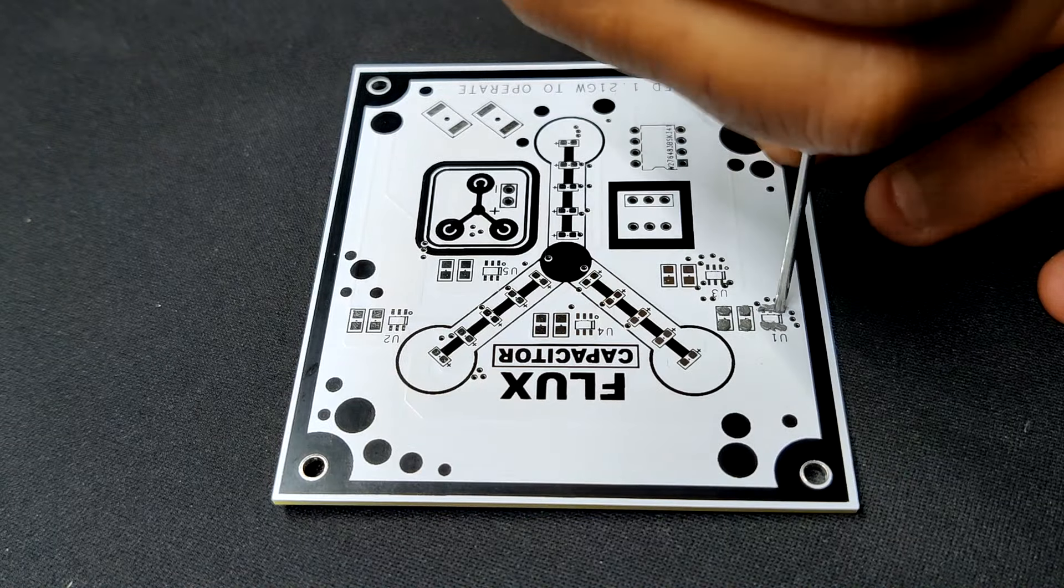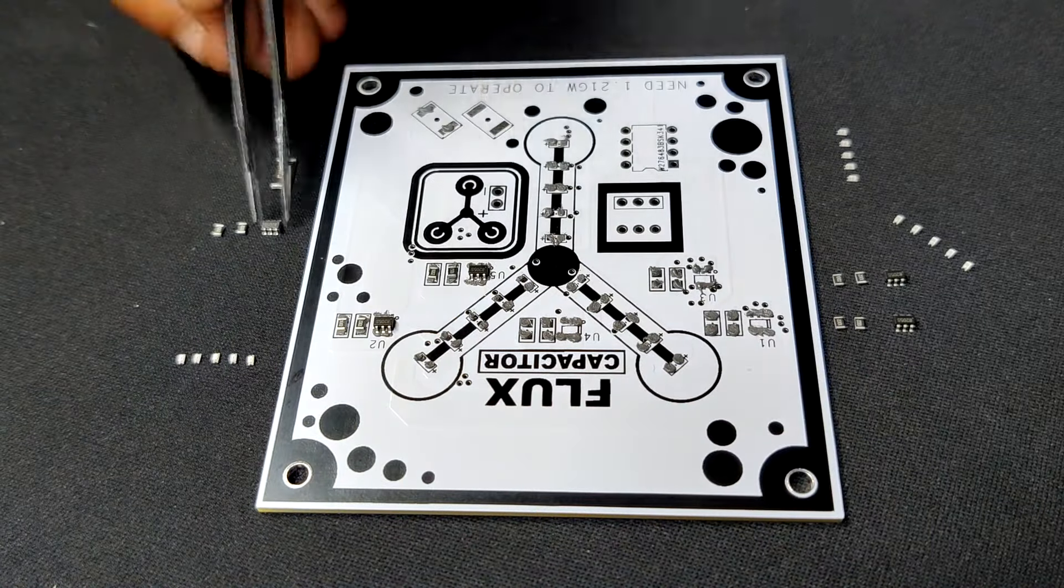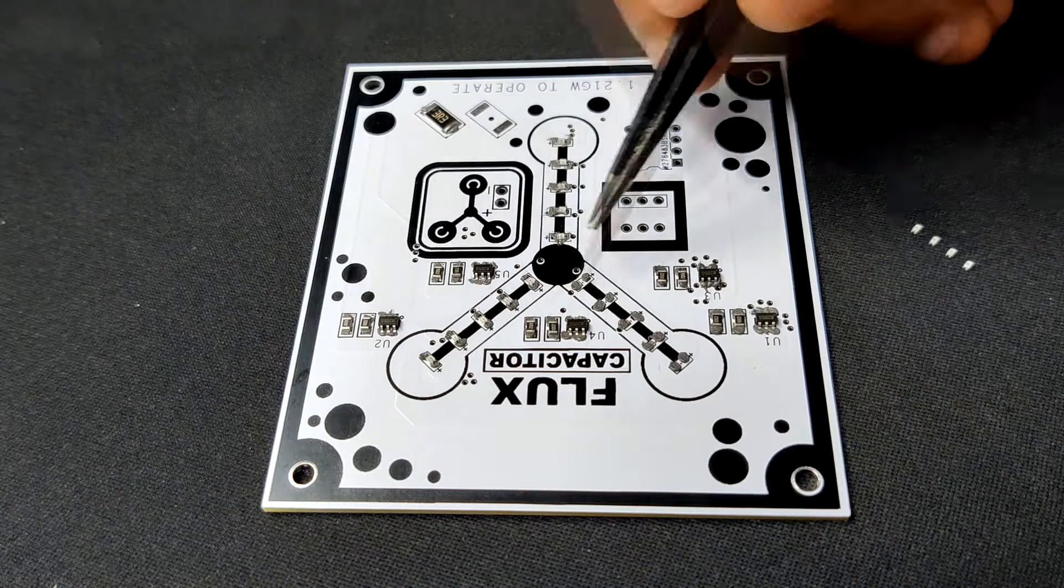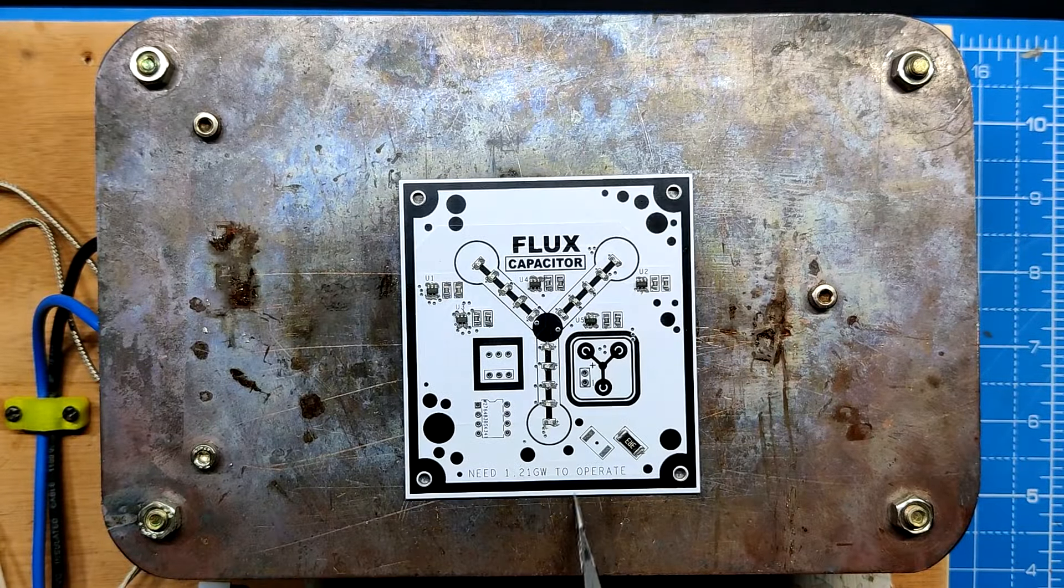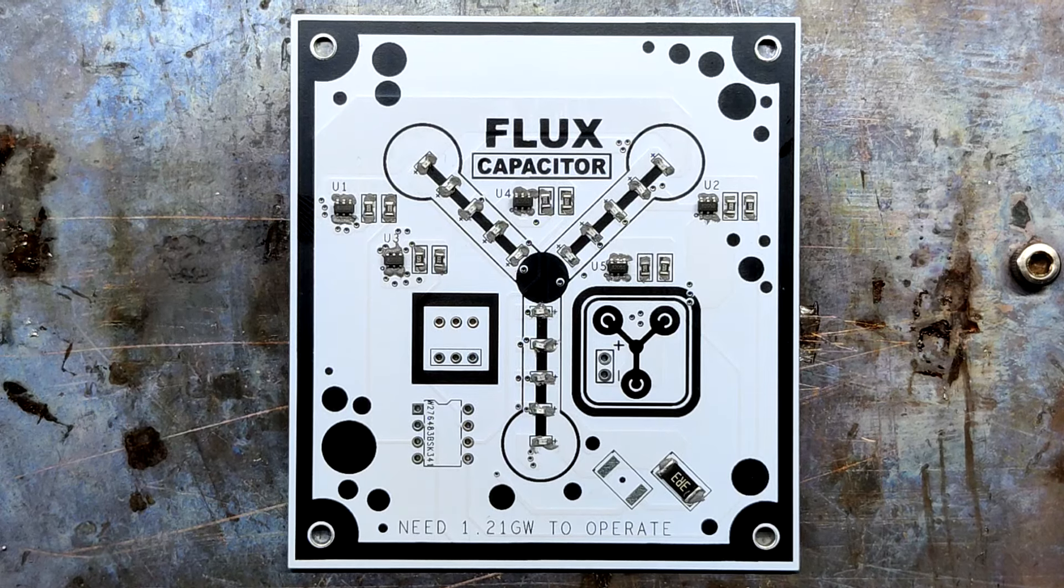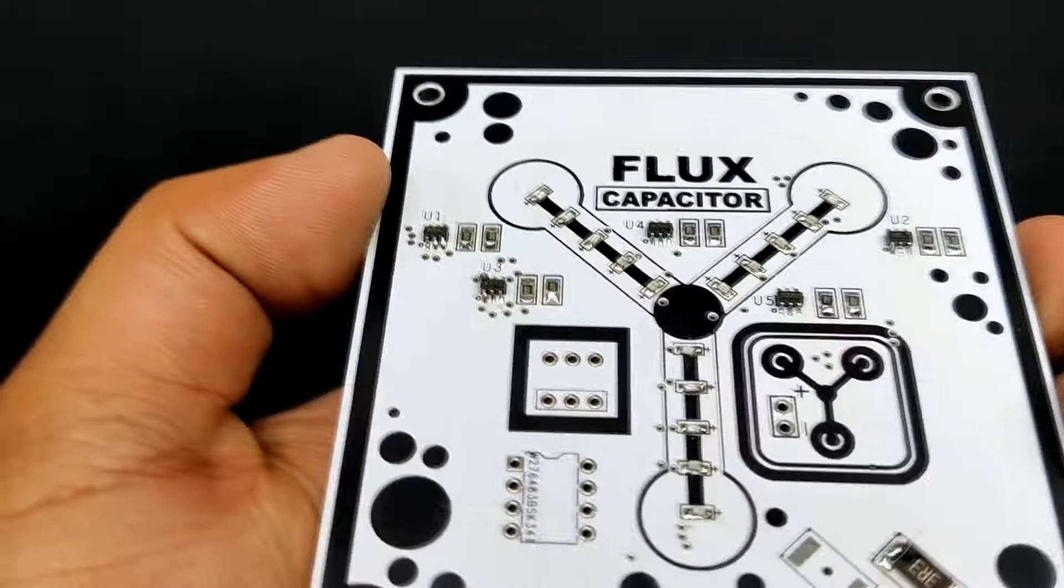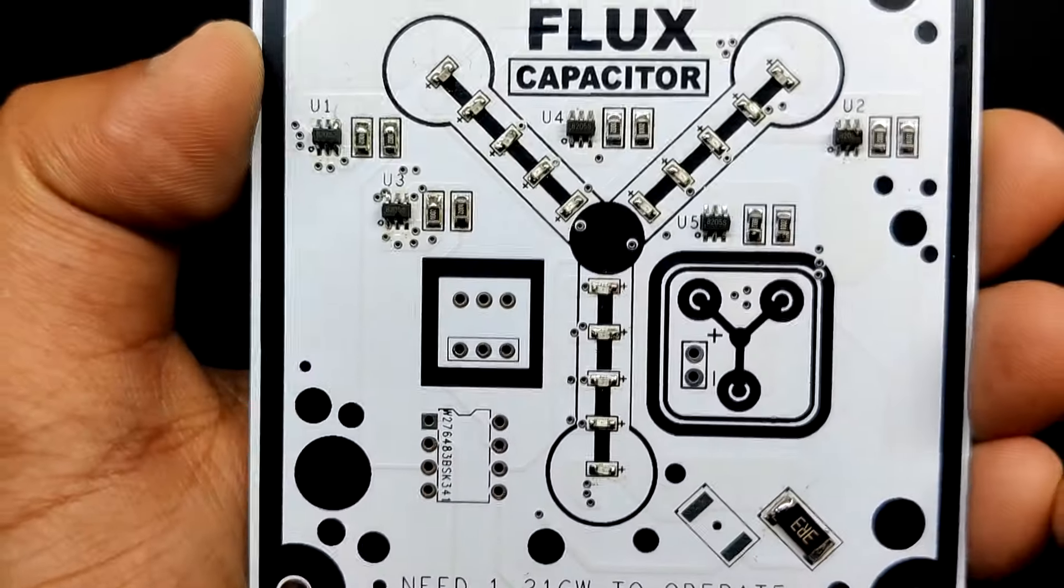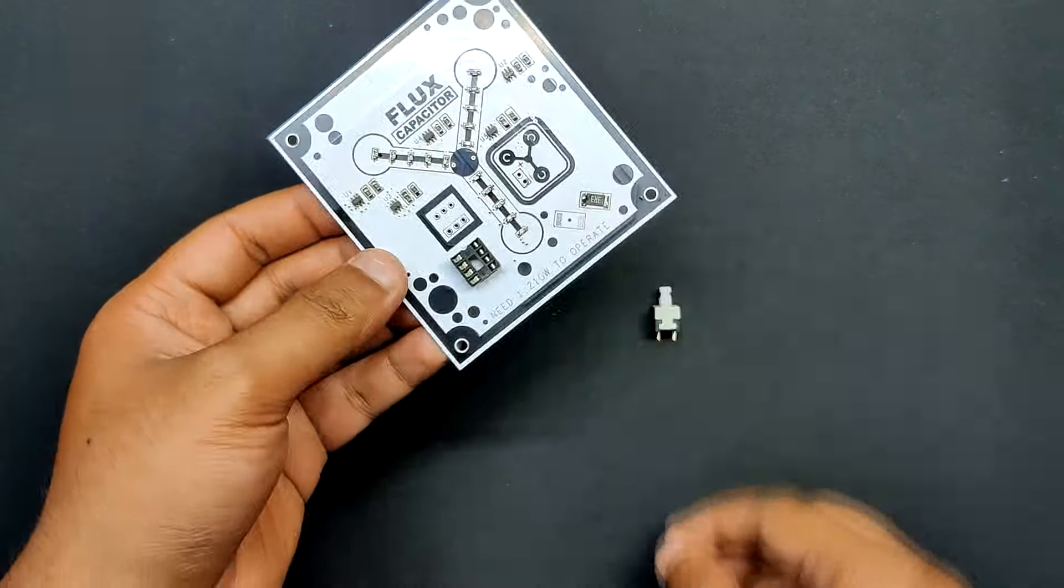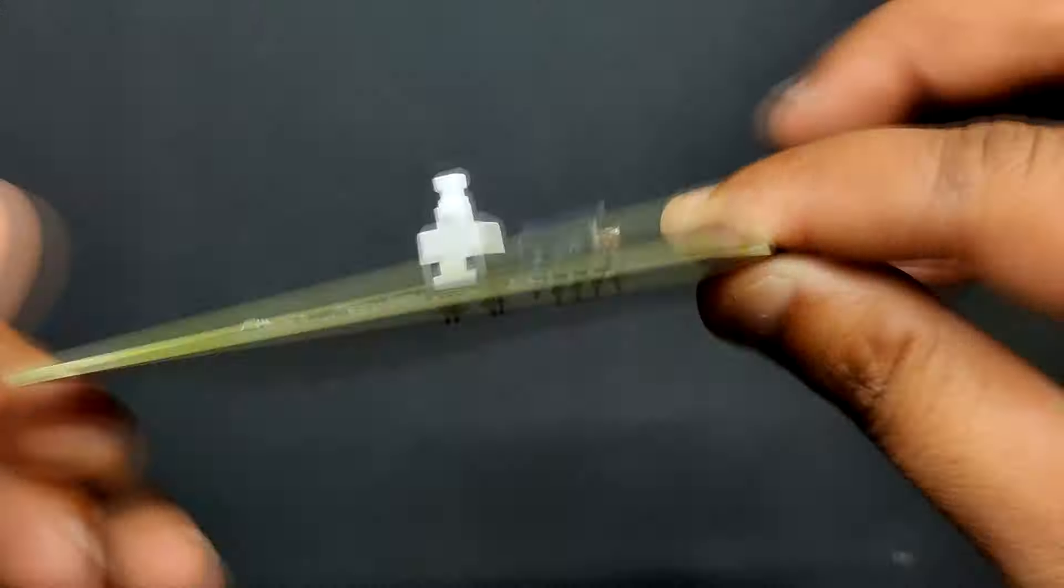The PCB assembly process began by first adding solder paste to each component pad. Next, we pick and organize each SMD component after positioning them in their proper location. After that, we set the board on our PCB reflow hotplate, which increases the PCB's temperature from below to the point at which the solder paste melts, allowing the components to be soldered to their pads. Next, we place the push switch and the DIP-8 socket in their proper location and then use a soldering iron to solder their respective pads. The board is now completed.